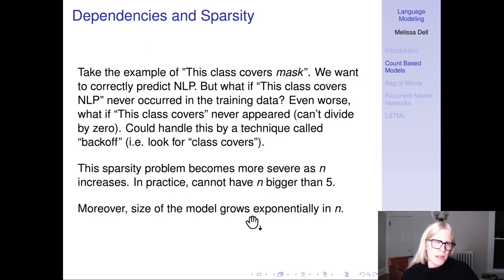Why can't this model account for long-range dependencies? Take the example 'this class will cover' and then mask, and we want to predict what mask is, which should be NLP. But what if 'this class covers NLP' never occurred in the training data? Even worse, what if 'this class covers' never appeared? You can't divide by zero. You could handle this by a technique called back-off where instead you look for 'class covers', but this sparsity problem becomes more and more severe as n increases. In practice, you cannot have n in your n-gram bigger than five because then you have too much of a sparsity problem. Moreover, the size of the model is going to grow exponentially. To be implementable and not have a sparsity problem, you have to have n be pretty small, but then once n is small you can't cover long-range dependencies.